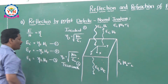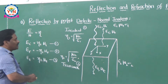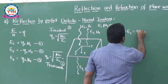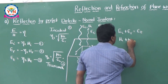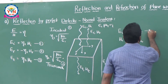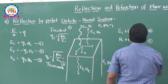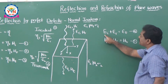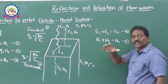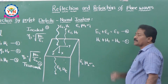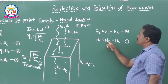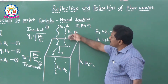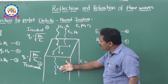From the boundary conditions, we have: EI plus ER equals ET (fourth equation), and HI plus HR equals HT (fifth equation). Note that EI plus ER equals ET is a vectorial addition — when substituting the values of electric field intensity, ER may carry negative values. From these five basic equations, we can establish the relationship between the incident, transmitted, and reflected fields.